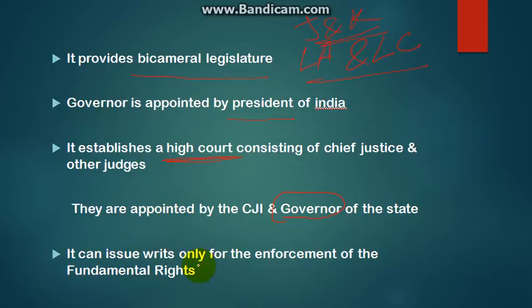Very importantly, the High Court of Jammu and Kashmir can issue writs only for the enforcement of fundamental rights. This is a distinct feature. Whereas in other states like Maharashtra, Karnataka, Andhra Pradesh, and Tamil Nadu, the High Courts have the right to issue writs not just for fundamental rights but for other matters as well. This is the key difference between the High Court of J&K and those of other states.